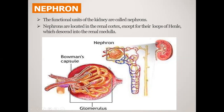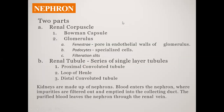This is Bowman's capsule. Now we can see the nephron. There are two parts of the nephron. One is Bowman's capsule and the other is the glomerulus. The Bowman's capsule is a part of the glomerulus, which is a cluster of capillaries.